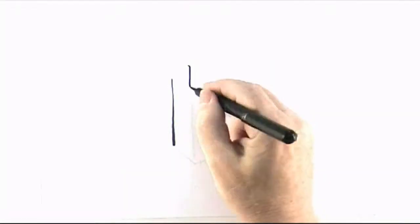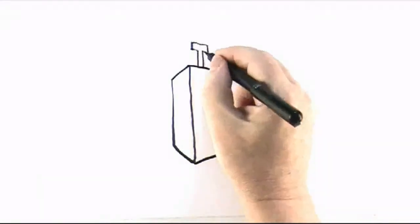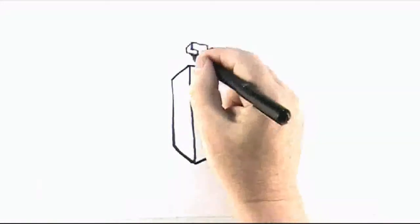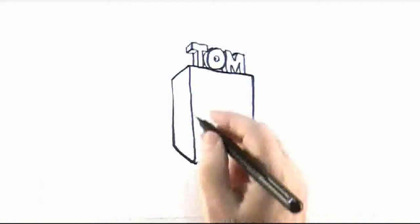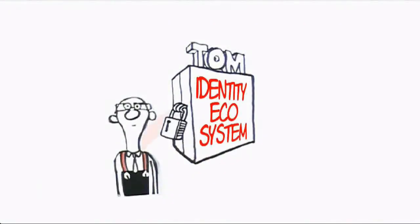In the first four Jericho Forum identity videos we learnt about the concepts and principles for building an identity ecosystem. Now in the final video we are going to look at what we need to change and develop to build a viable identity ecosystem using these concepts.